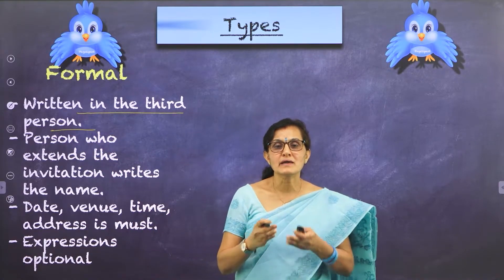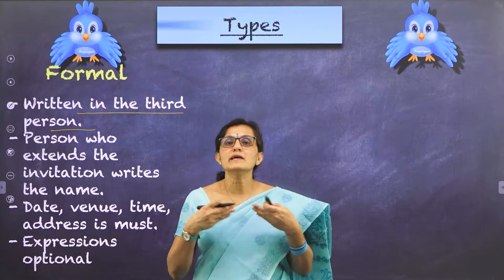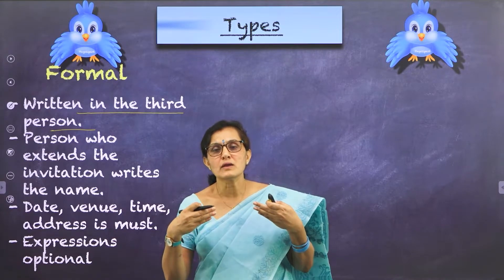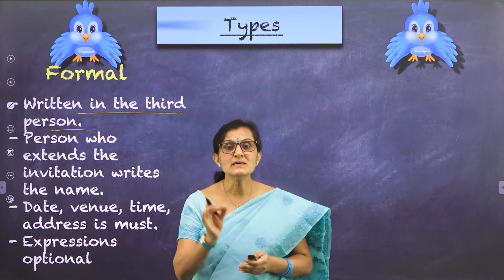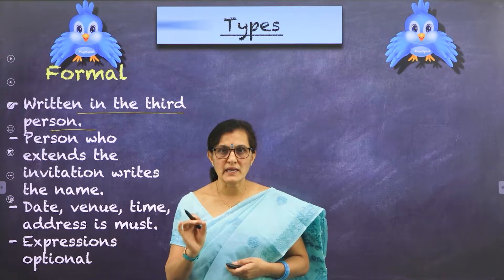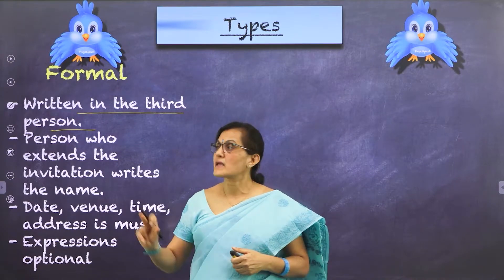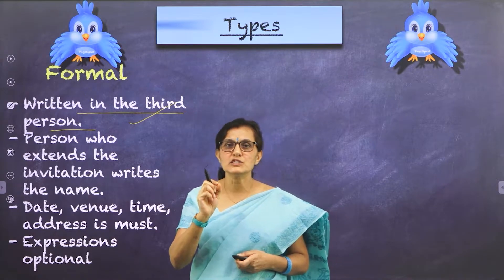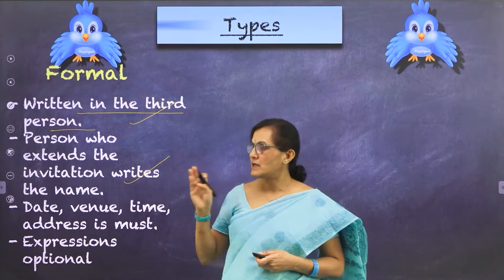What do you mean by third person? For example, consider me as Chopra, and I want to invite you all for my daughter's wedding. I cannot write 'I' or 'we are inviting you for our daughter's wedding.' Instead, I need to write: 'Mr. and Mrs. Chopra request the pleasure of your company for their daughter's wedding.' So I write my name on top — Mr. and Mrs. Chopra — and their daughter's wedding. That is third person. A formal invitation is always in the third person, and the name of the person who extends the invitation must be there.